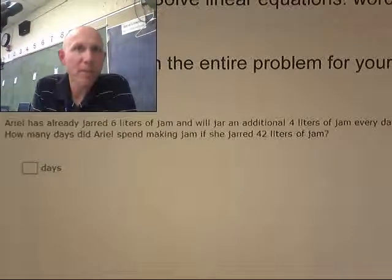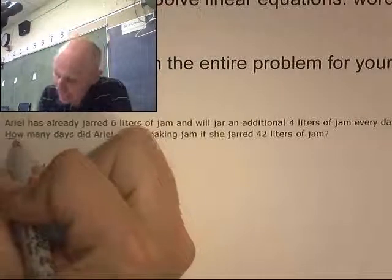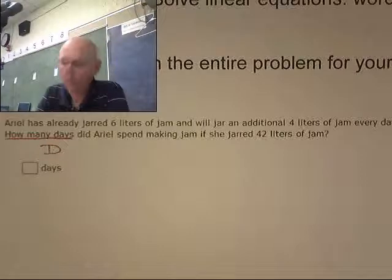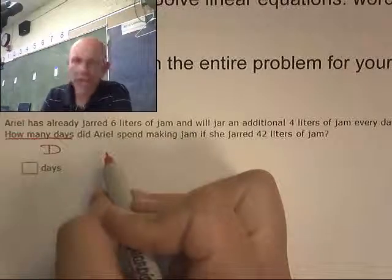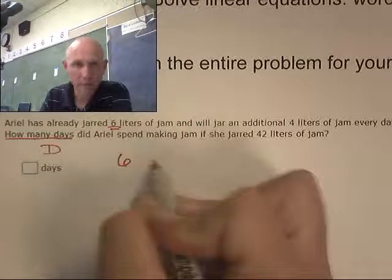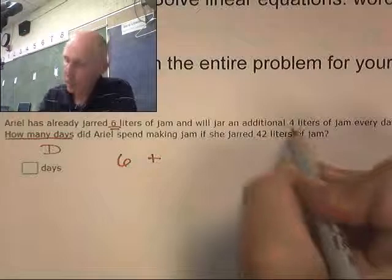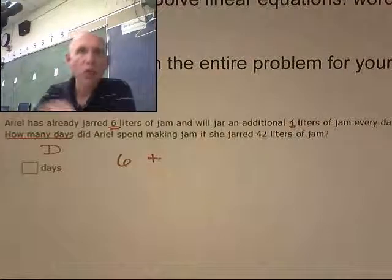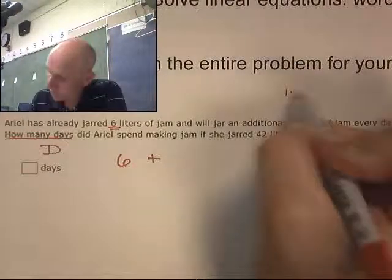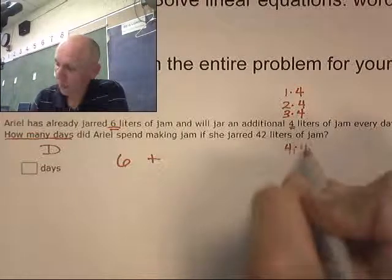I'm going to pick a variable. What am I looking for? What am I trying to solve for? Am I looking for jars or am I looking for days? How many days? So I'm looking for D. Days. Here's my equation. How many jars does she currently have? Six. Plus. Ready? Here's the algebra. In one day, she'll do four more. In two days, she'll do, what's that? Two times four. In three days, so right, she'll either do one times four, she'll do two times four, she'll do three times four, four times four.